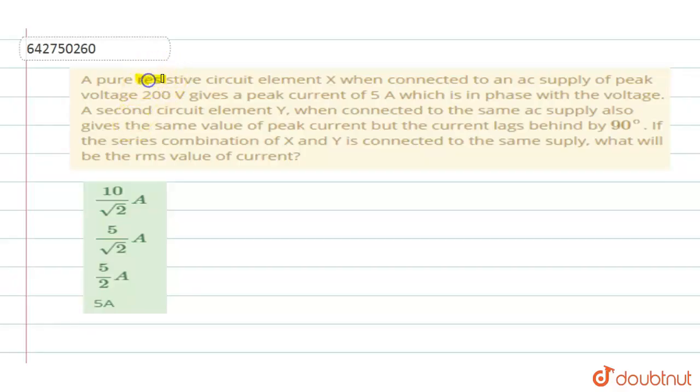A pure resistive circuit element X when connected to an AC supply of peak voltage 200V gives a peak current of 5A which is in phase with the voltage. A second circuit element Y when connected to the same AC supply also gives the same value of peak current but the current lags behind by 90 degrees. If the series combination of X and Y is connected to the same supply, what will be the RMS value of current?